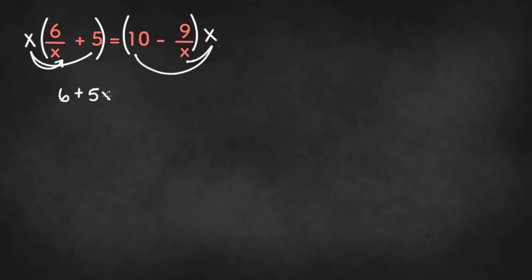On the right side we have x times 10, which is 10x, and negative 9 over x times x, which is negative 9.